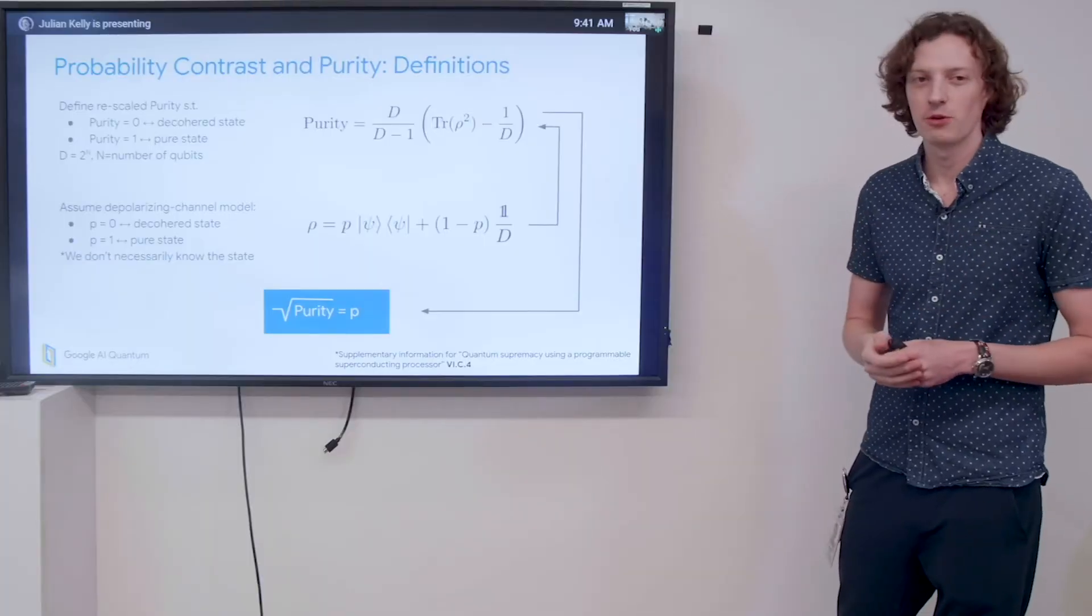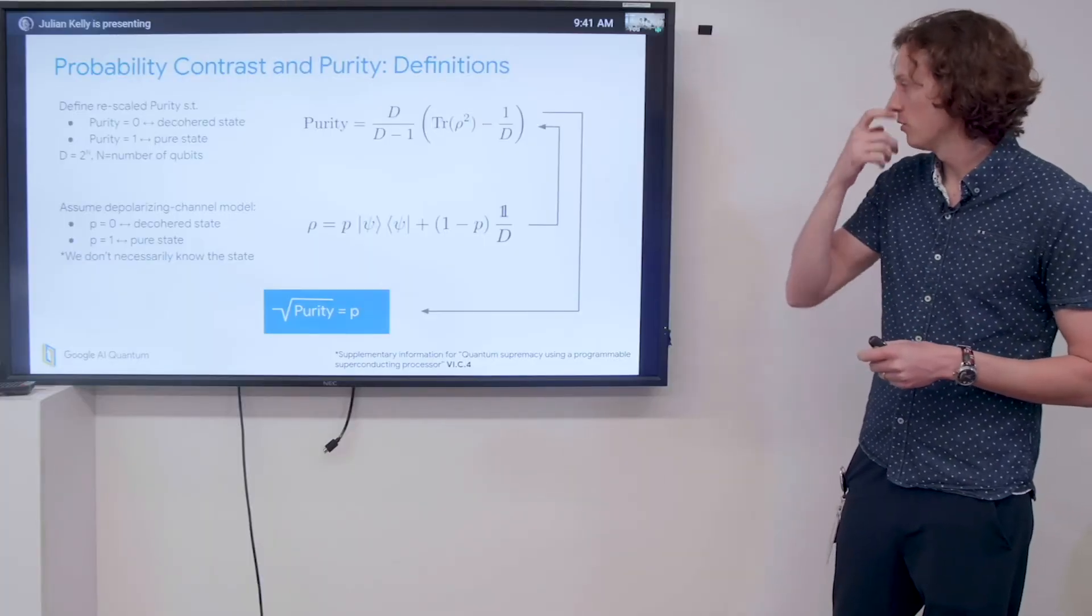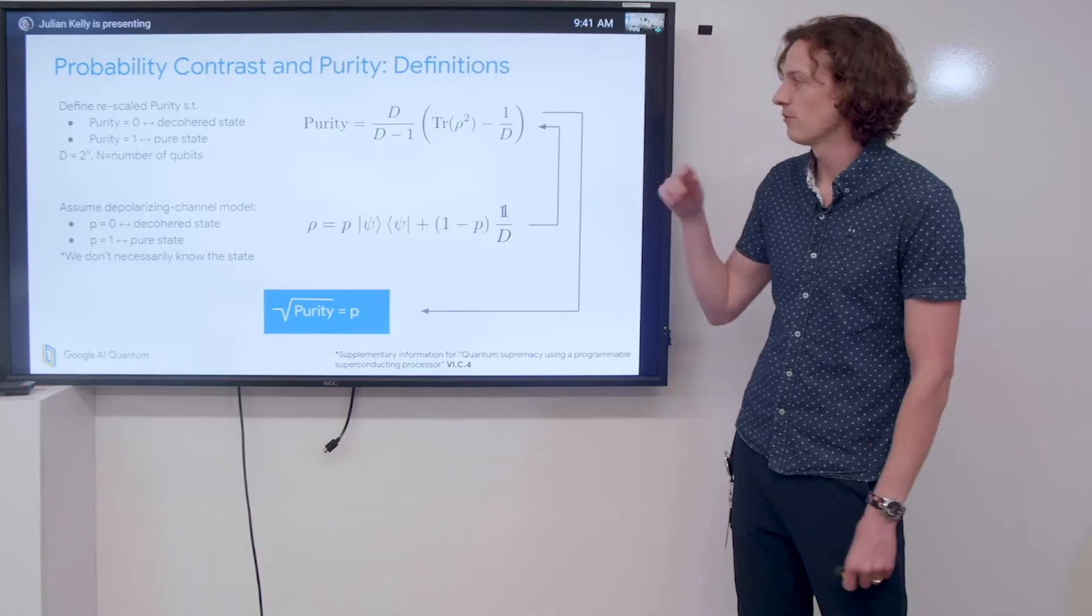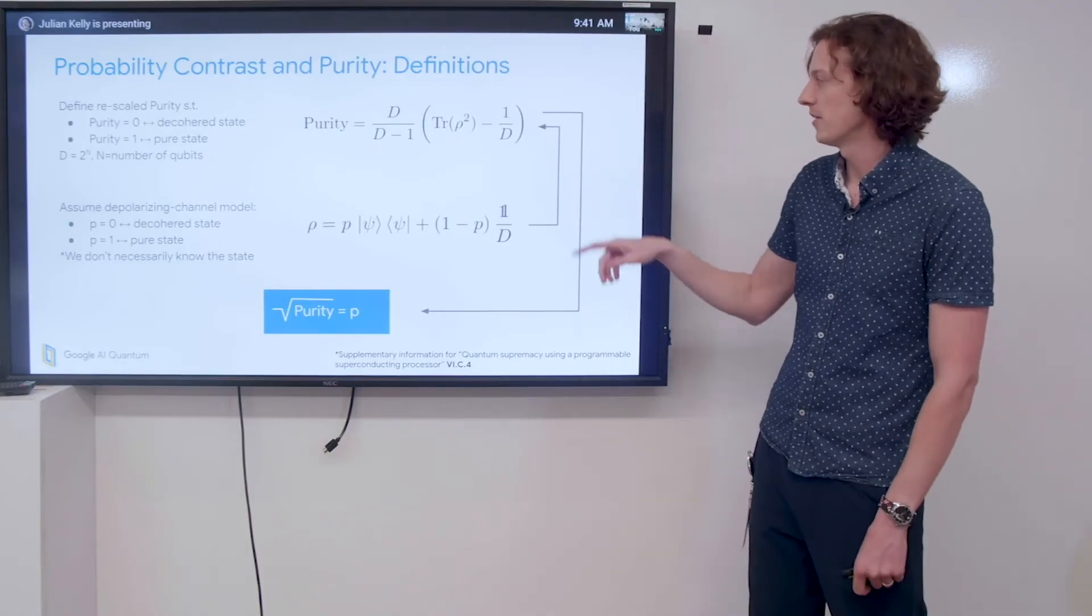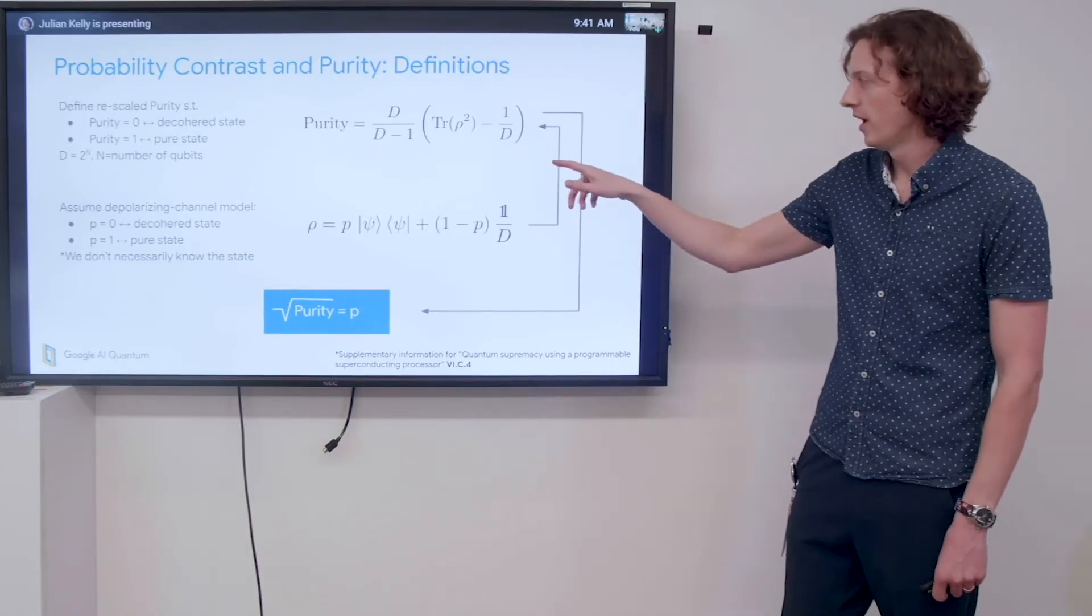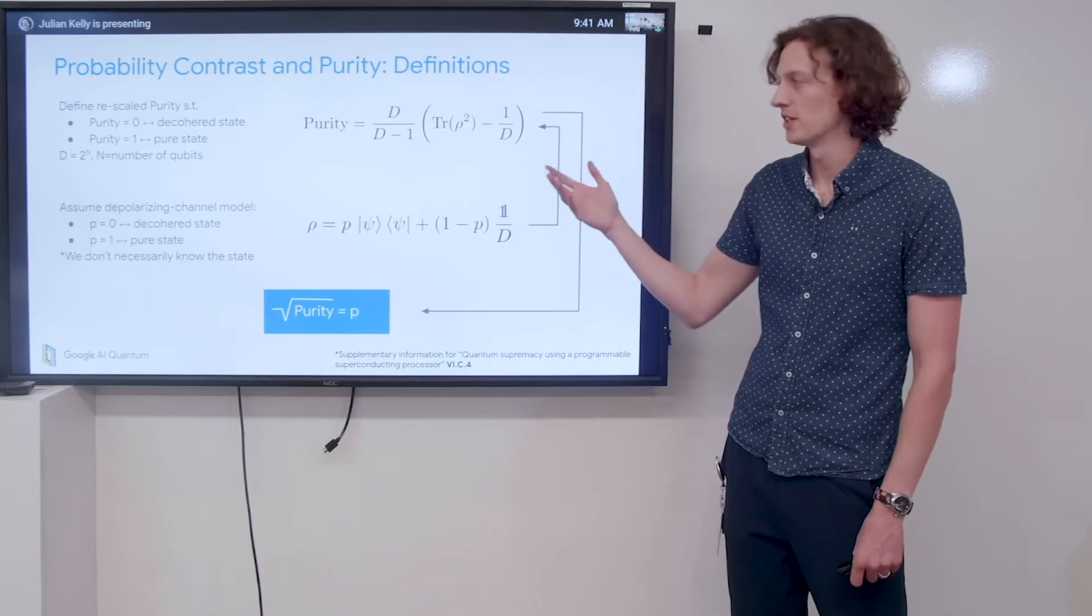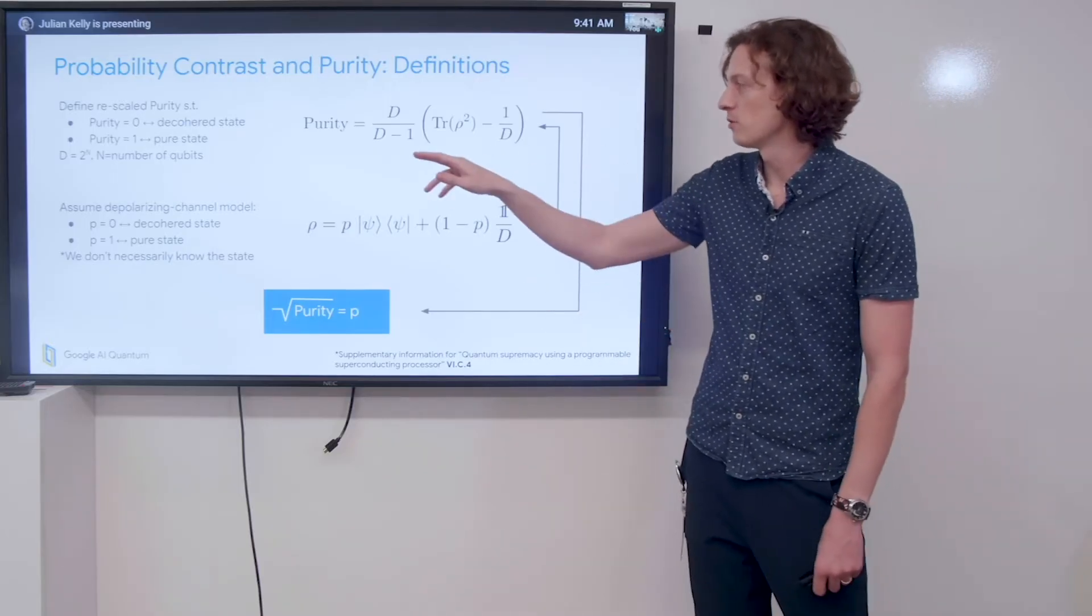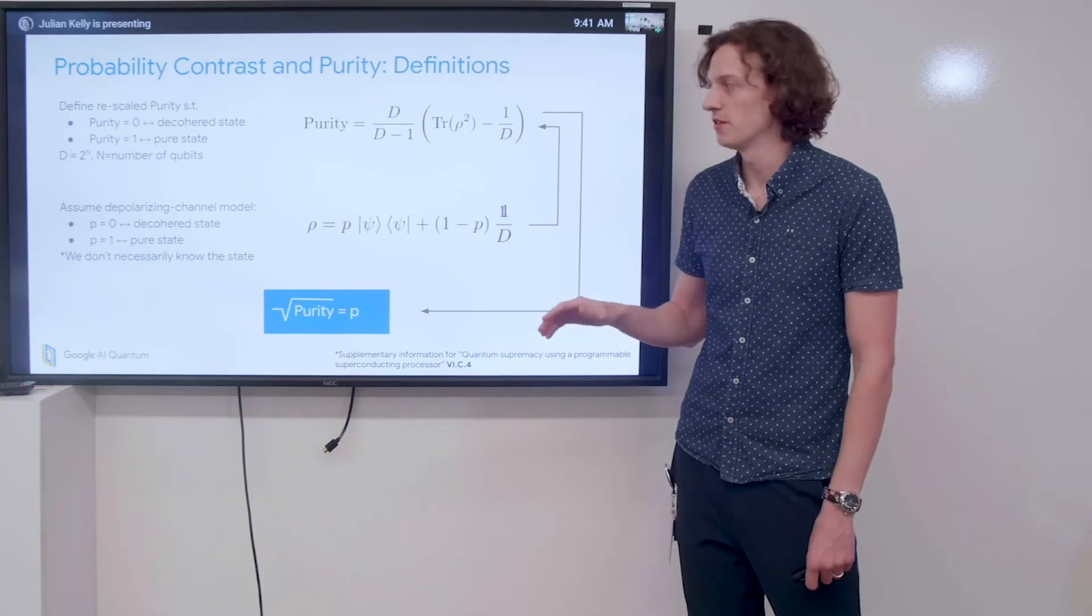They helped set me straight by going through some of the math. We're first going to define a rescaled version of purity that looks like this. Essentially this is trace of rho squared, with some dimension factors that have to do with the size of the Hilbert space. We define it this way so that purity equals zero corresponds to a completely decohered state, and a purity of one corresponds to a completely pure state.